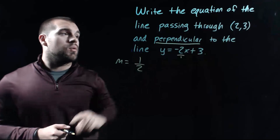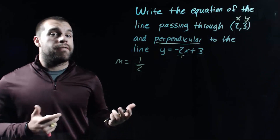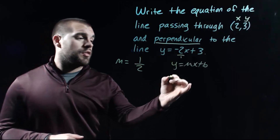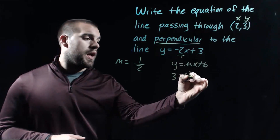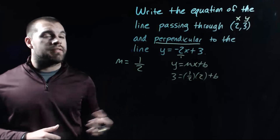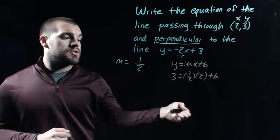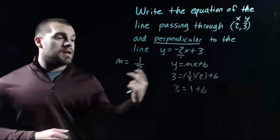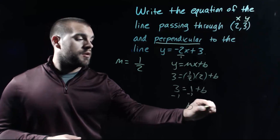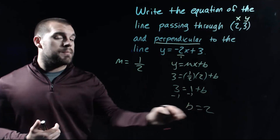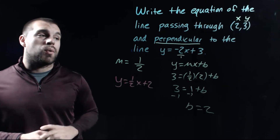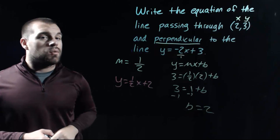We use the point 2, 3 and y equals mx plus b to find our b value. The y value is 3, the slope is 1 half, the x value is 2, and we leave plus b on the end. 1 half times 2 is 1. Subtracting 1 from each side gives us b equals 2. So the equation of our line perpendicular to y equals negative 2x plus 3 is y equals 1 half x plus 2.